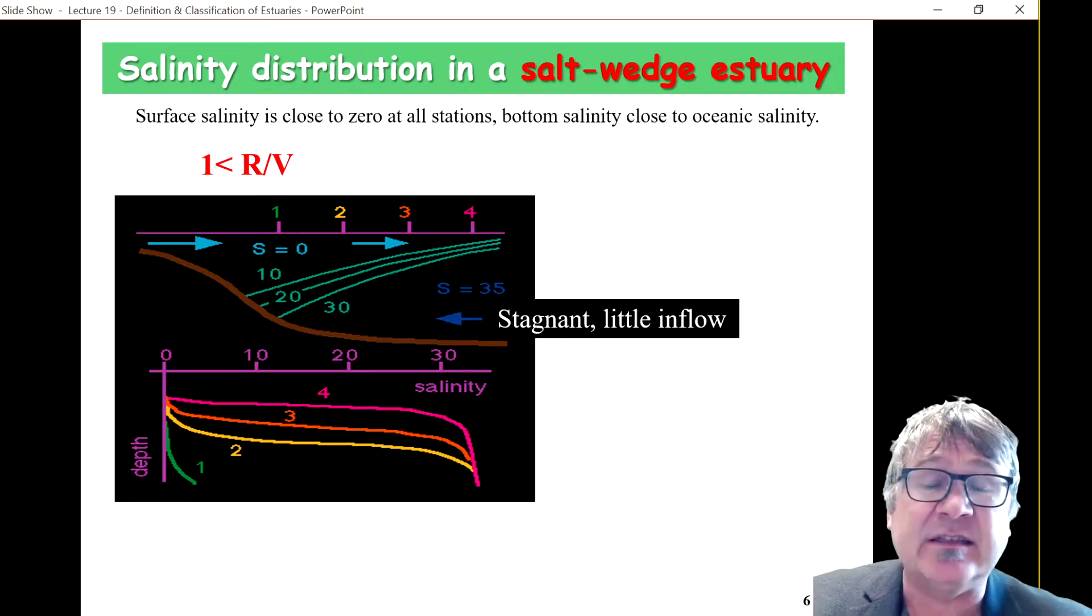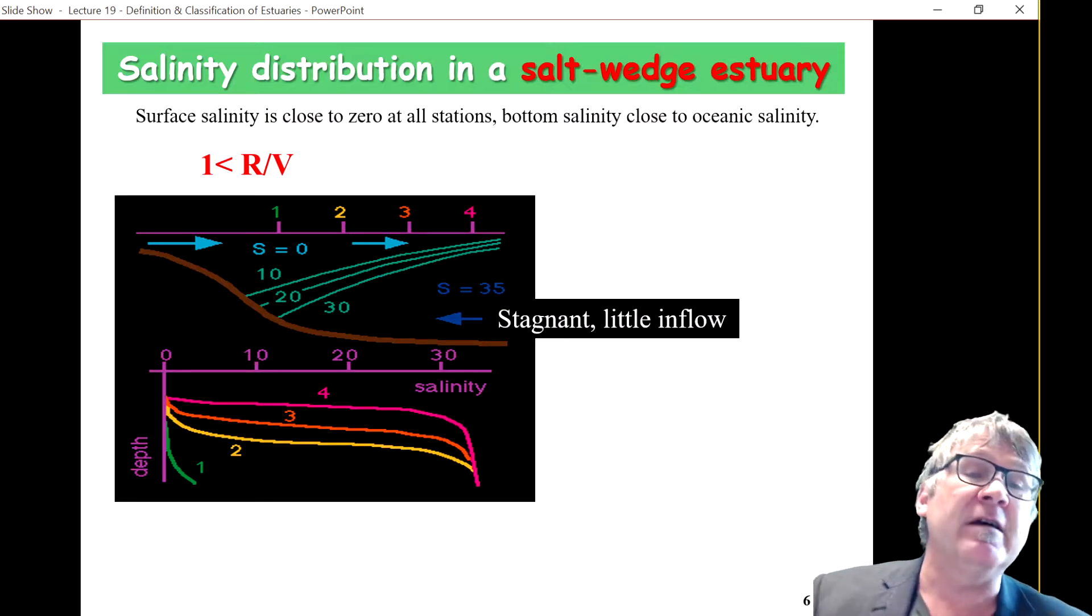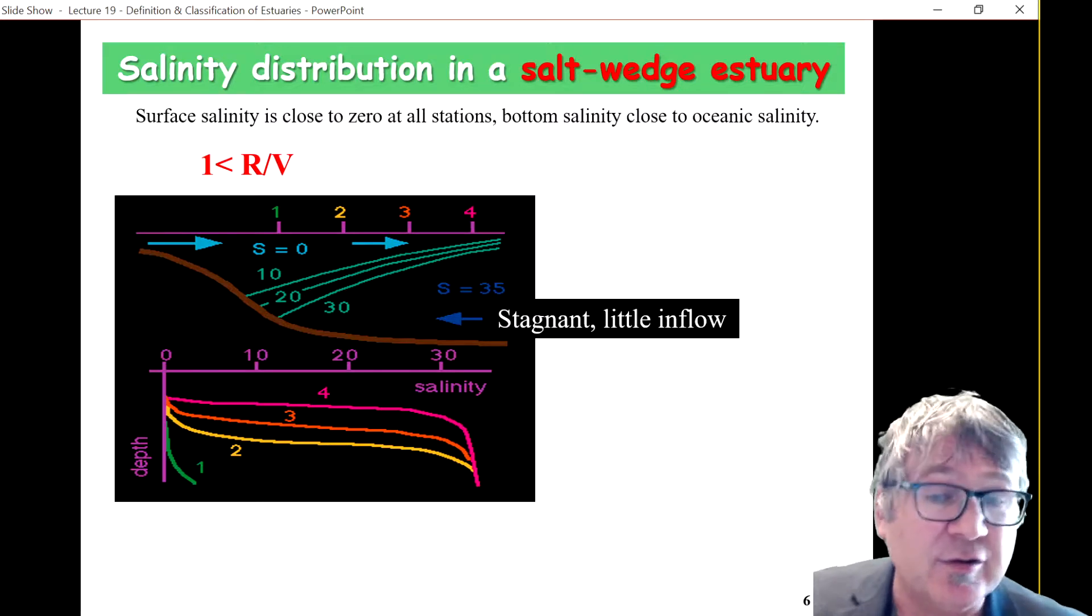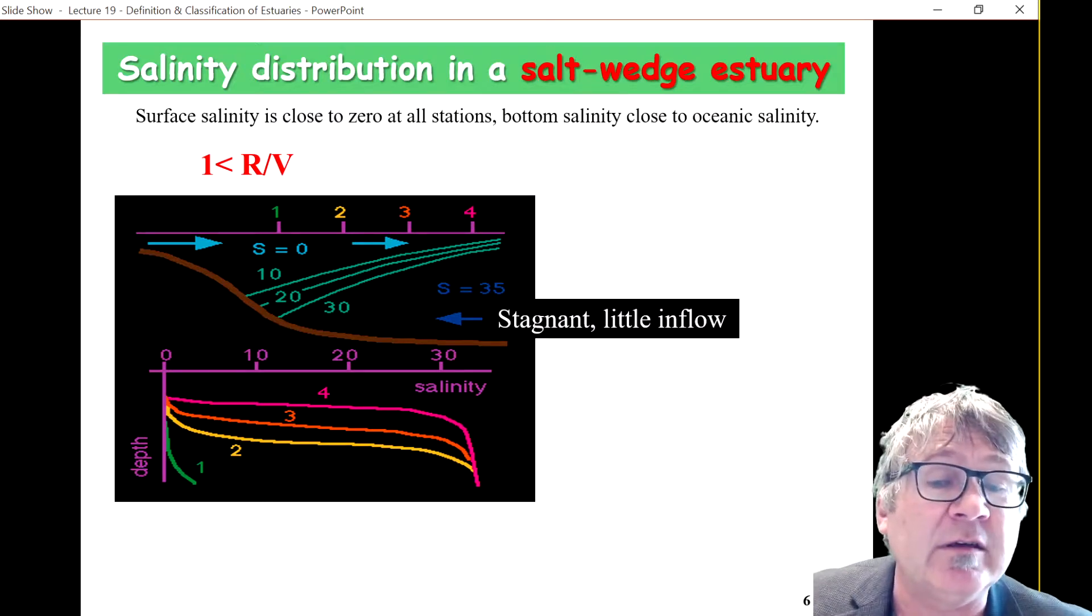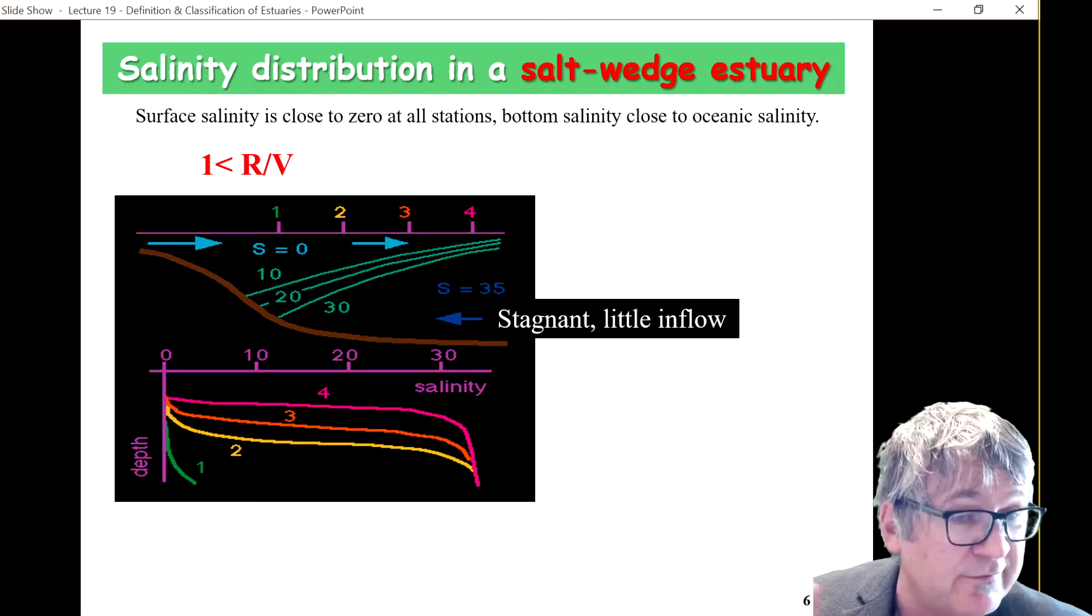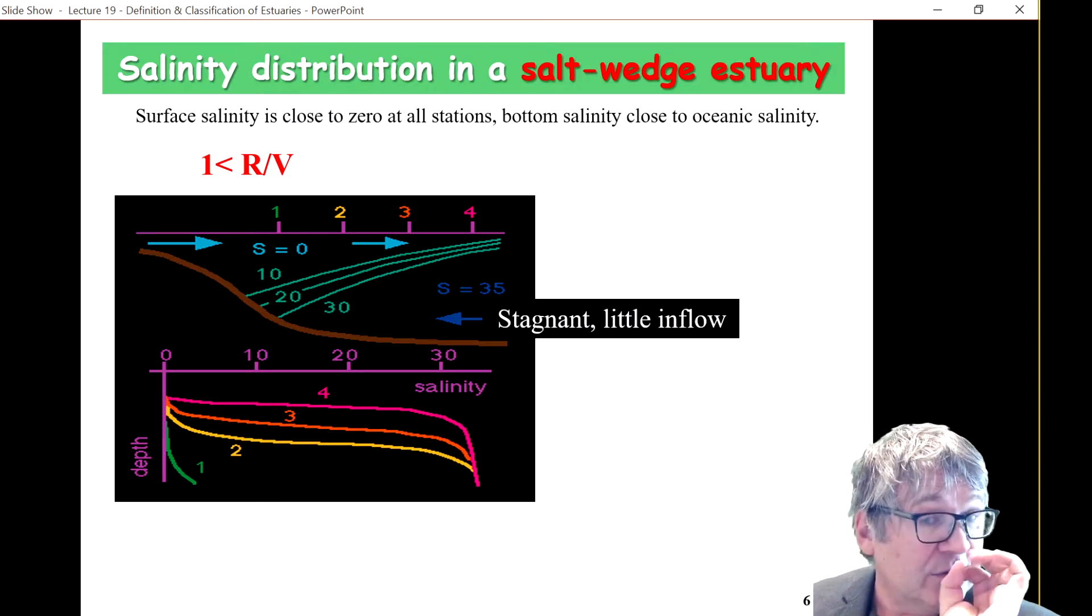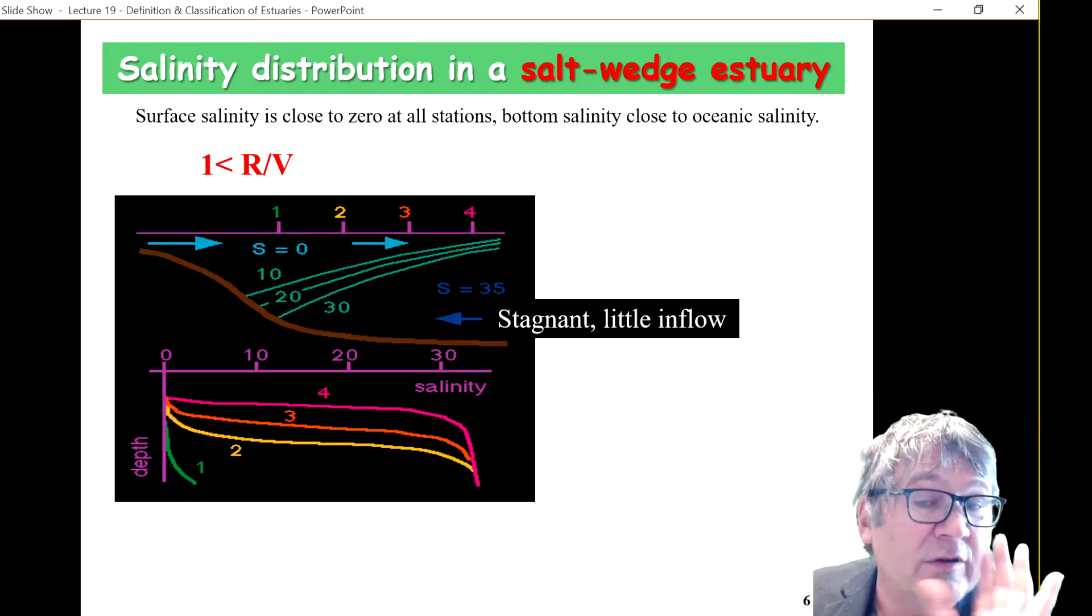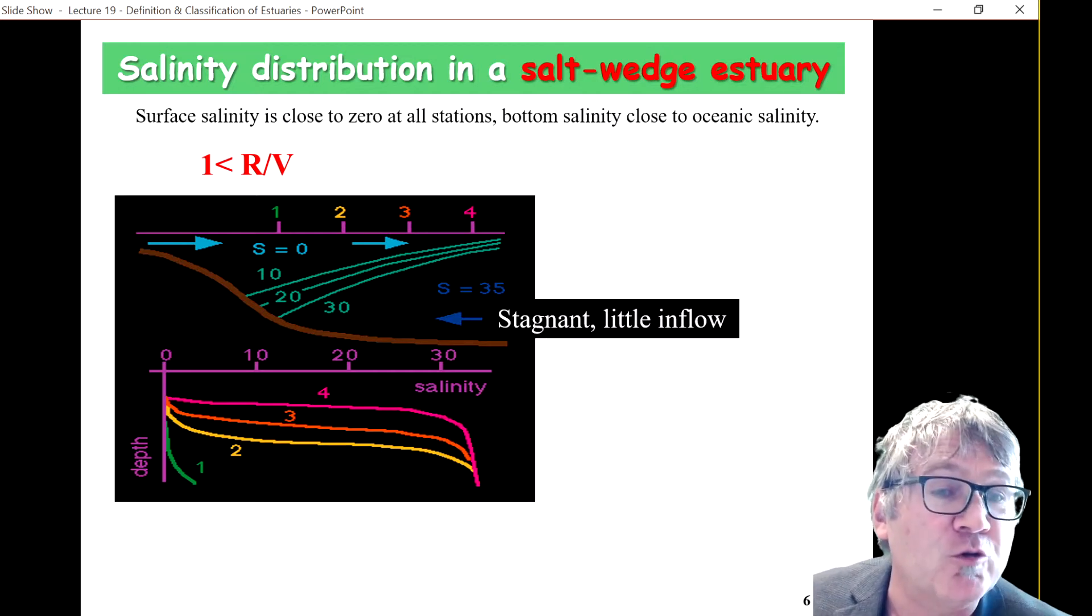However, you still at the same time have flows, which are continuous flows of river water into the estuary, an outflow into the ocean and an inflow from the ocean into that system. It's a very little inflow here in this system, but anyway. Okay, so the salinity, although it doesn't change much, is not an indication of flows.